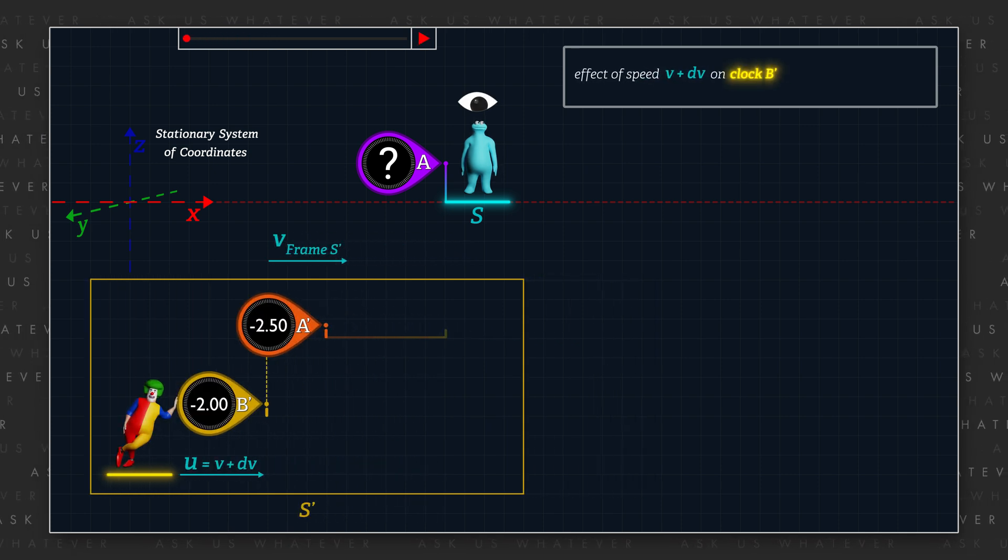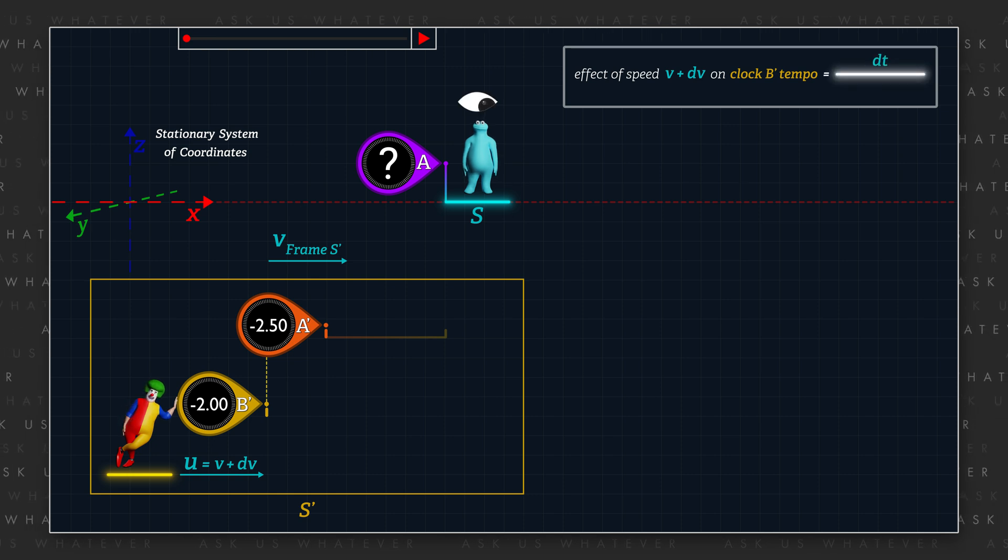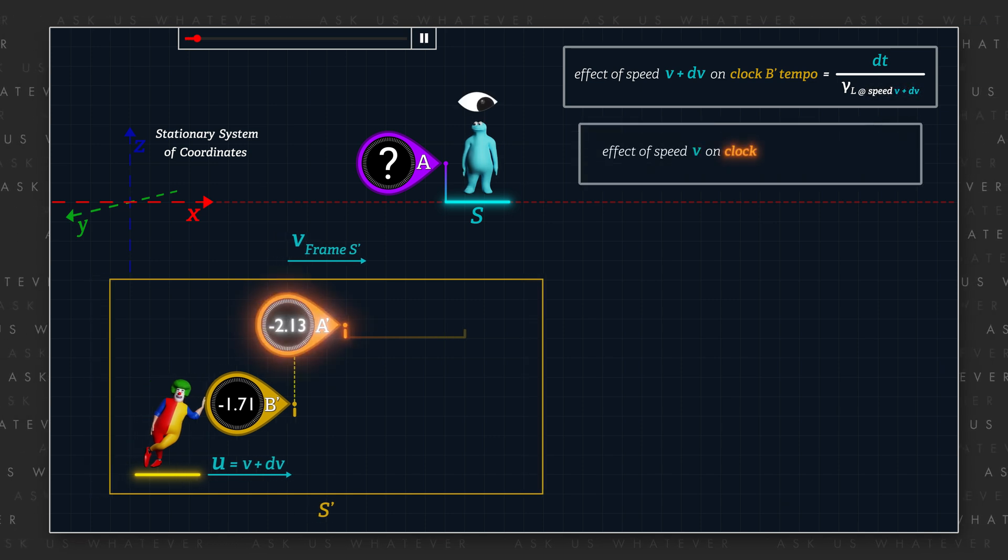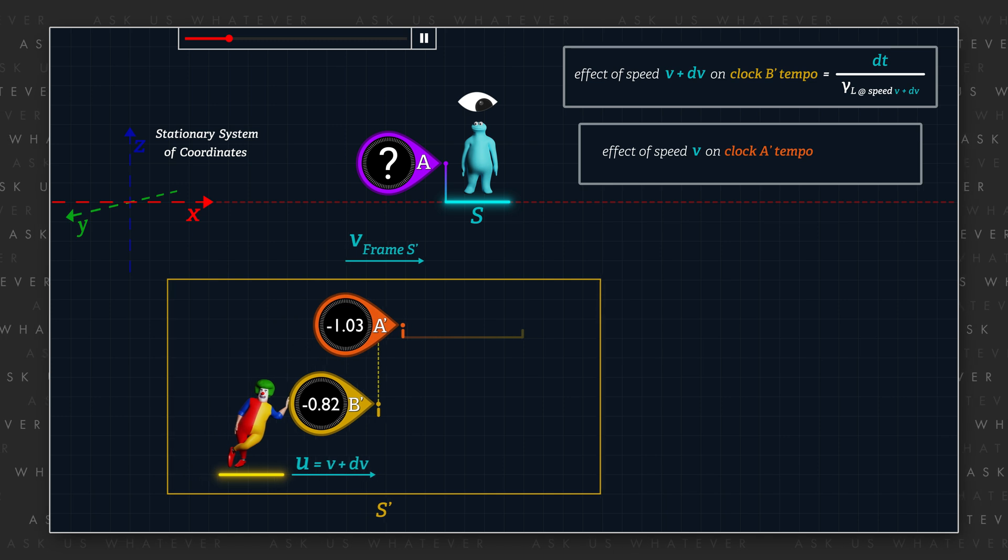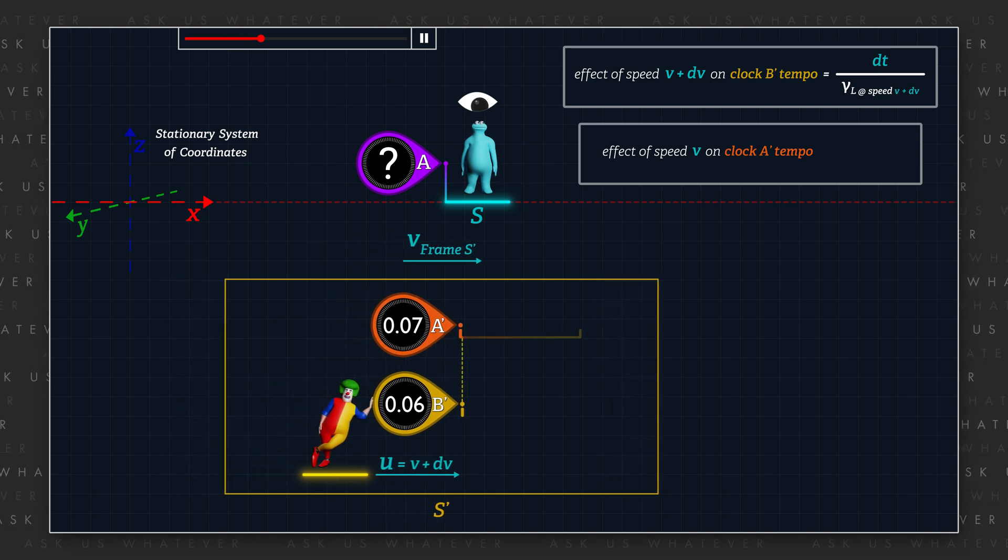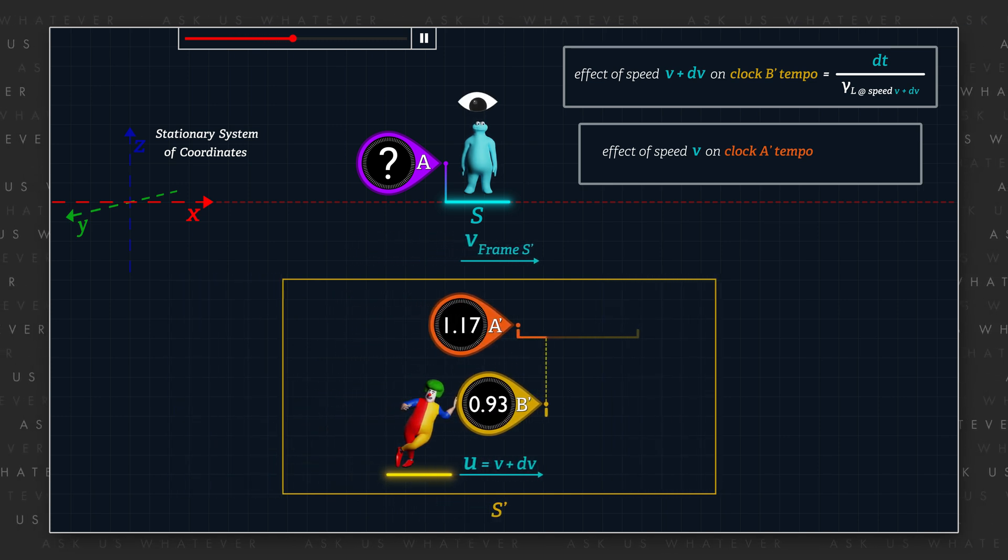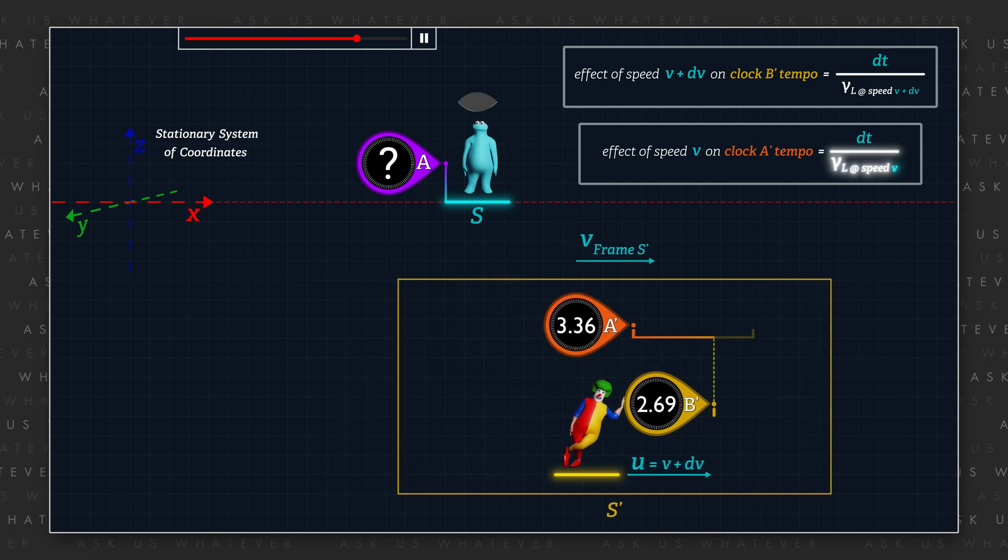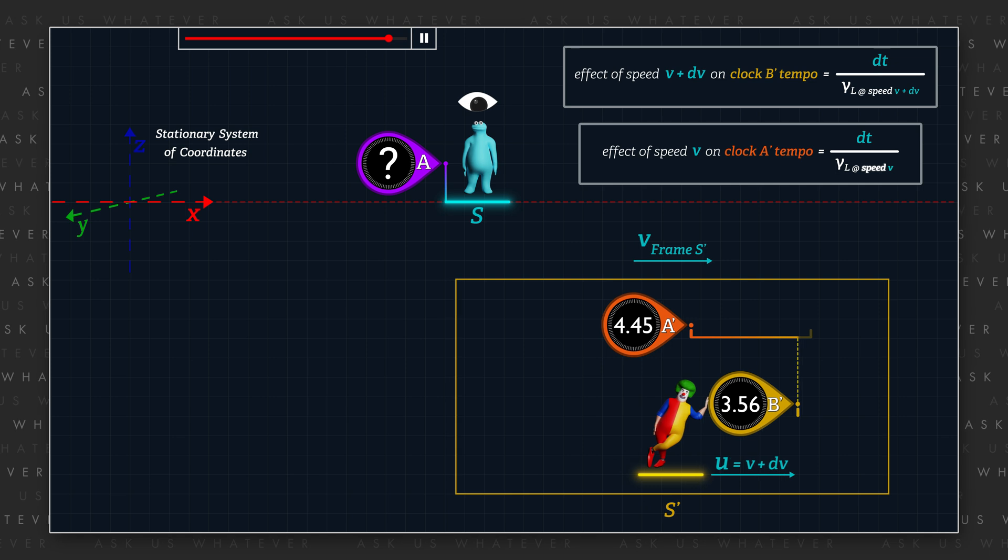Clock B's tempo for any given time interval DT will be equal to DT divided by the Lorentz Gamma factor evaluated at speed V plus DV. However, clock A' will beat slightly faster, such that a frame S time interval DT will appear on clock A' to advance by DT divided by the Lorentz Gamma factor evaluated at speed V.